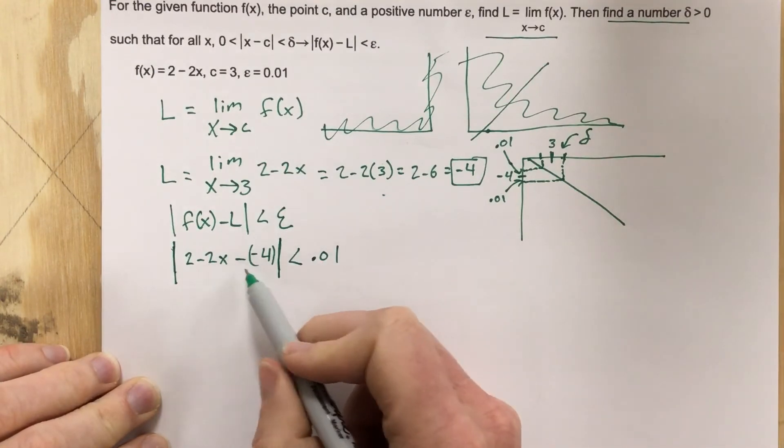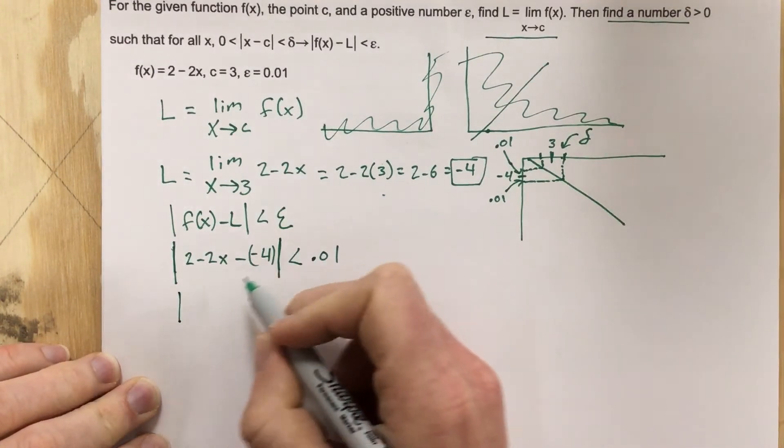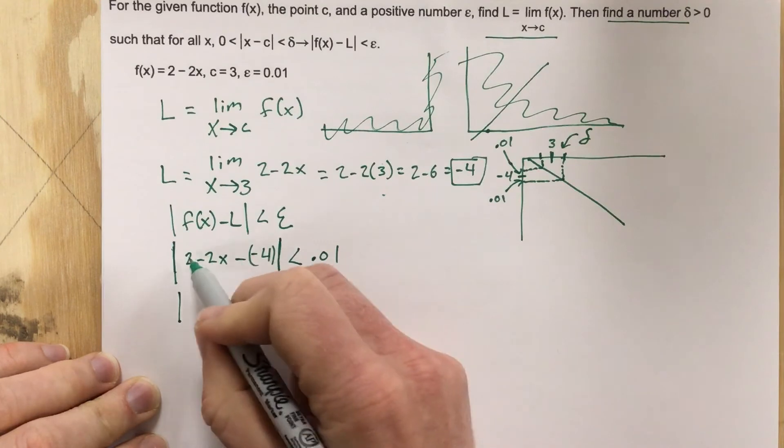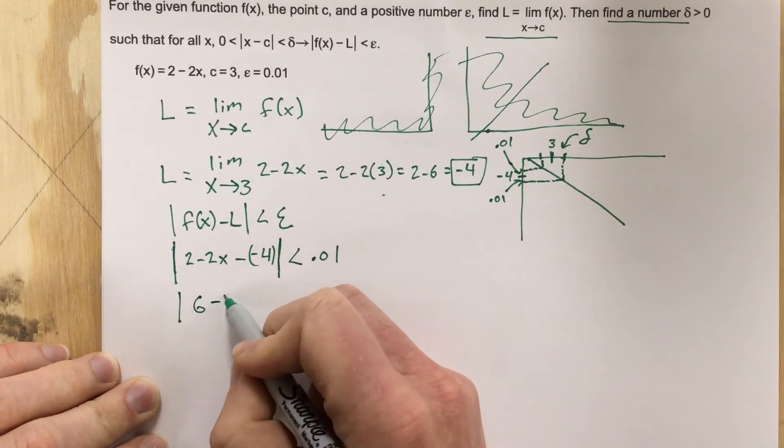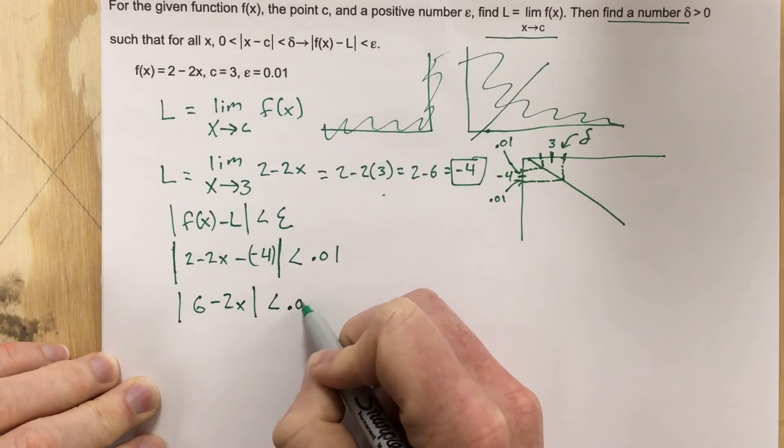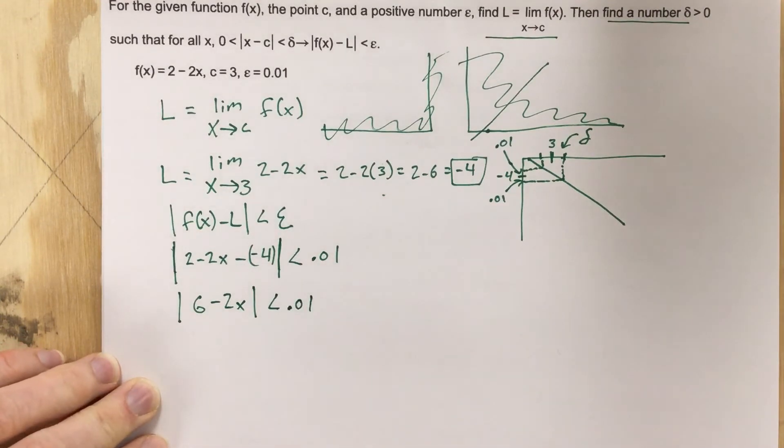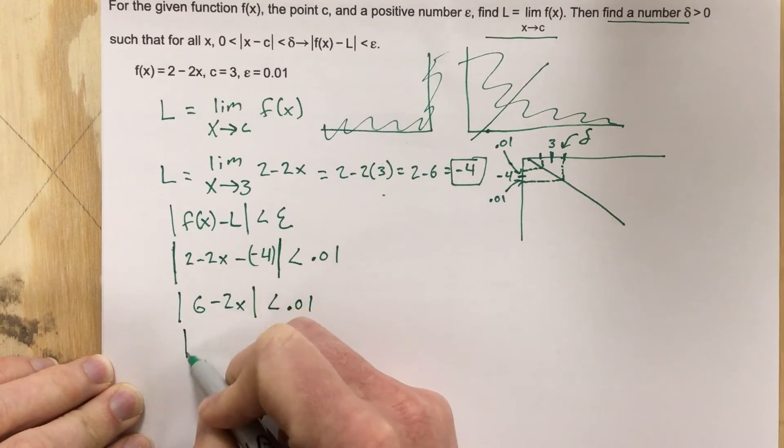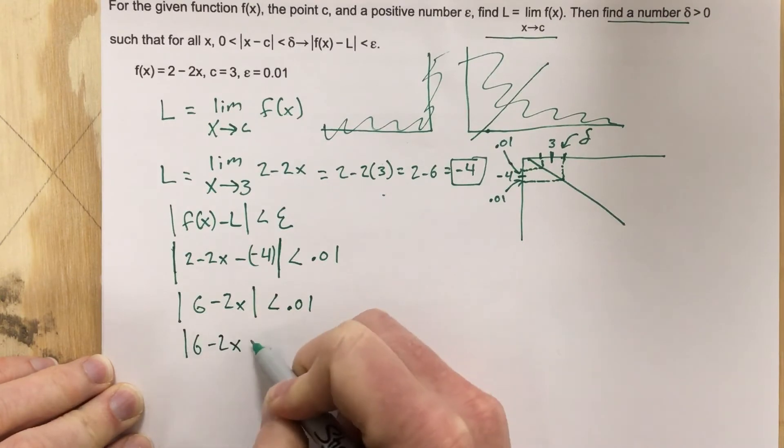That means when we combine some stuff inside there, we end up with, this is positive 4, so we end up with 6 minus 2x, absolute value, less than 0.01. I'm going to set that equal to 0.01, so absolute value of 6 minus 2x equals 0.01.